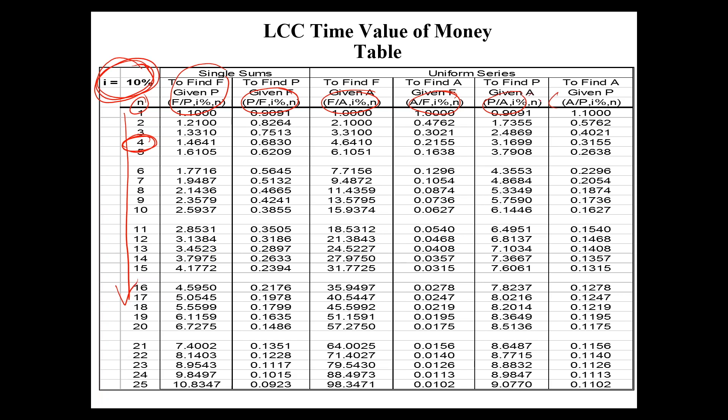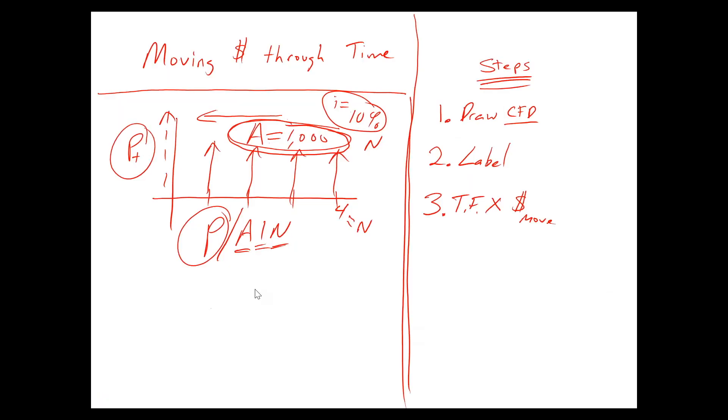This is where you're going to find the right factor. So in the problem we just had, the interest rate was 10%. The N was four. And we were trying to find P given A. So the table factor, we'd be going over to the P given A column. We would come down to the year four. We'd go across the row. And this would be our table factor right here. We're going to take this number and multiply it by the money we're trying to move through time.